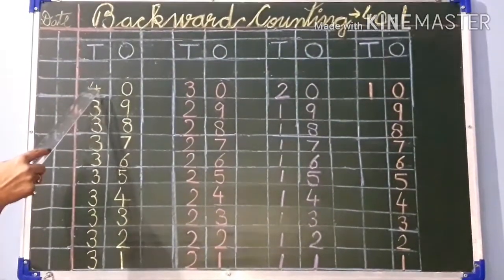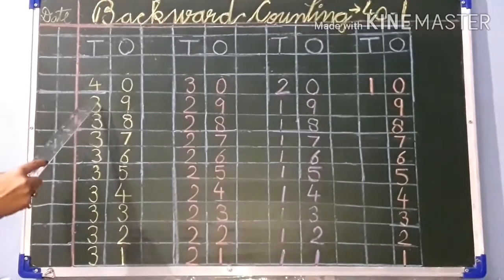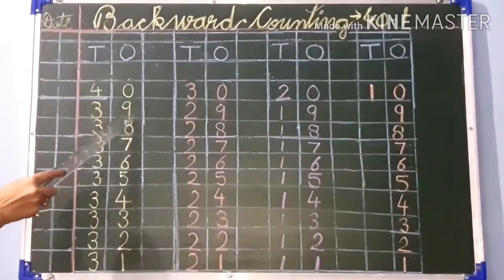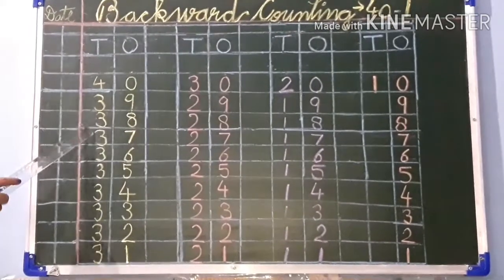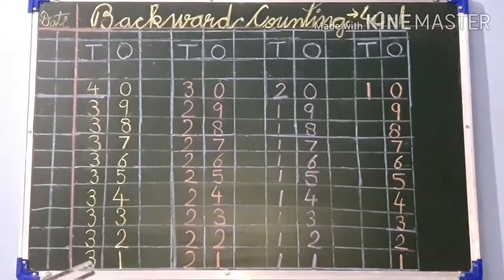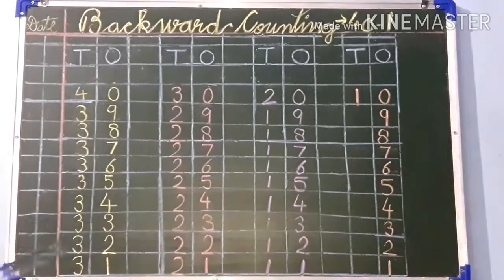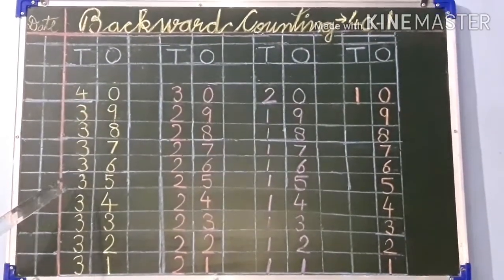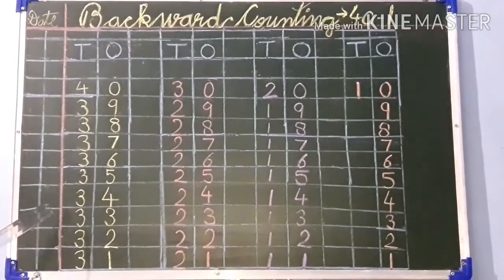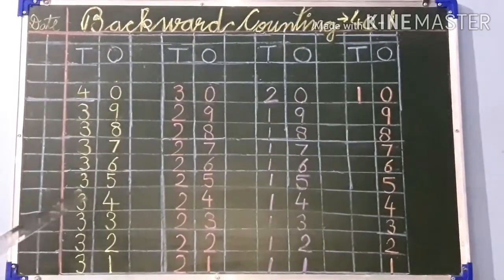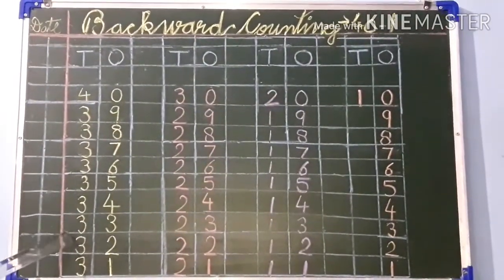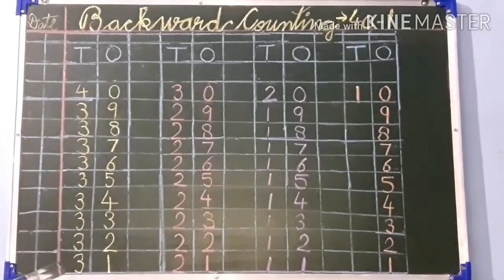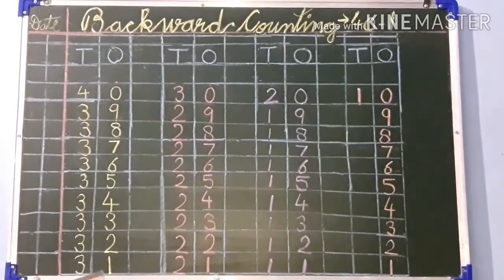Let's start our counting from 40: 40, 39, 38, 37, 36, 35, 34, 33, 32, 31.